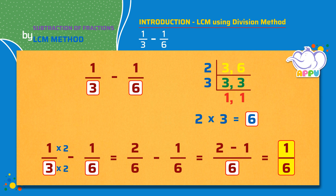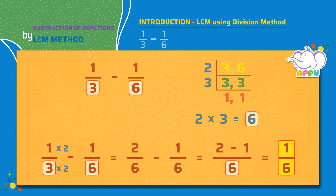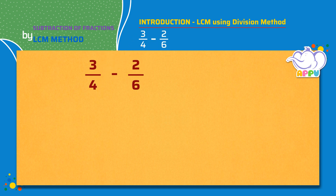Let's look at another example: 3 by 4 minus 2 by 6. We see that the denominators are not the same for both the fractions. Let's make the denominators the same by finding the LCM of the denominators 4 and 6.